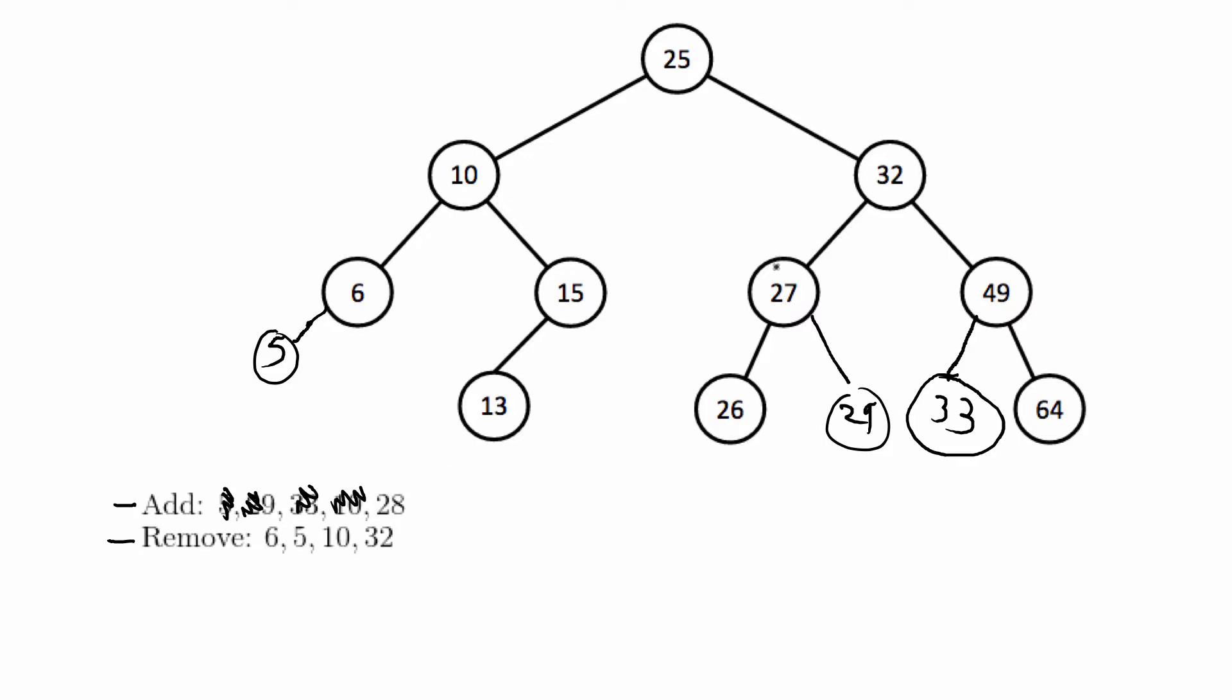28. 28 is less than 29 but more than 27 so we add it as a new leaf there and we are done with adding. And then removing basically has three cases.